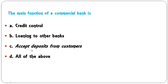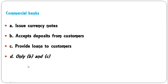The main function of a commercial bank is — credit control, loaning to other banks, accept deposit from customers, or all of the above? The correct answer is accept deposits from customers. Credit control and loaning to other banks are functions of the central bank, not commercial banks. C is the correct answer here.